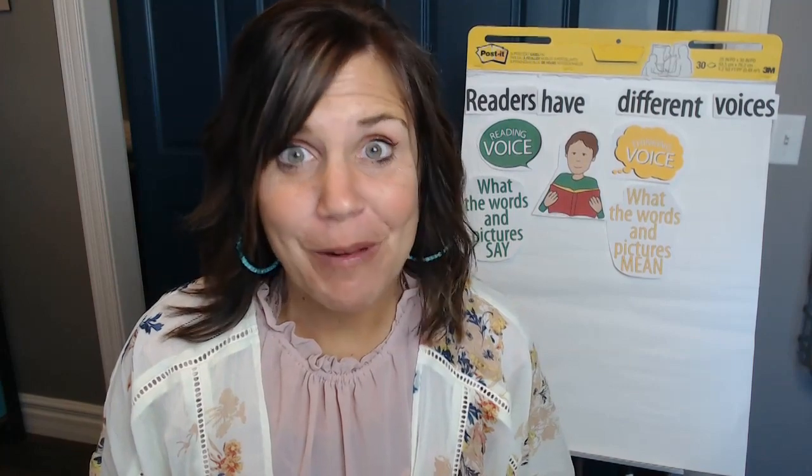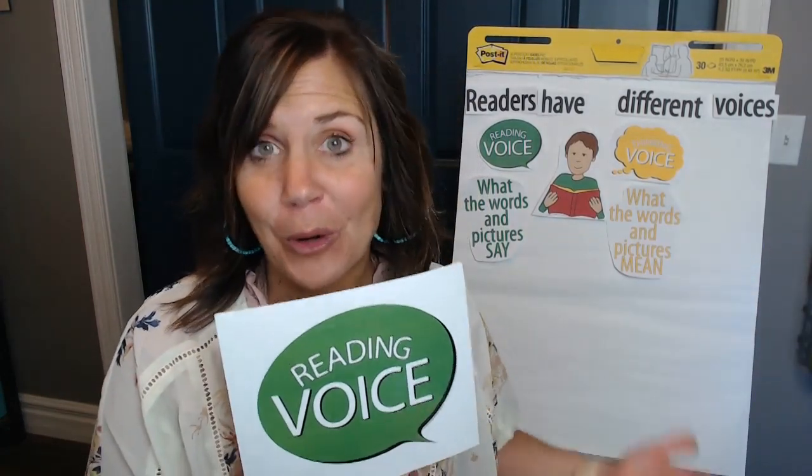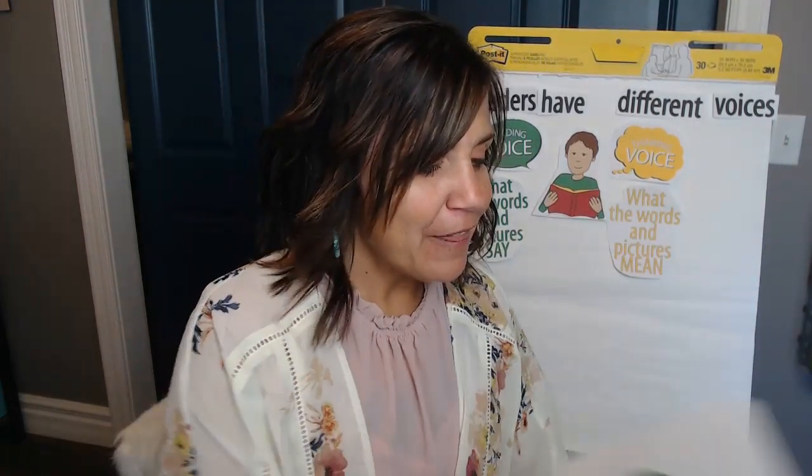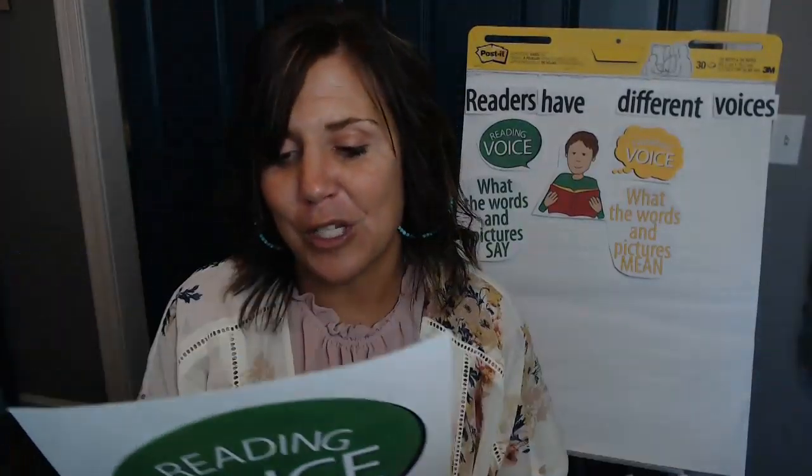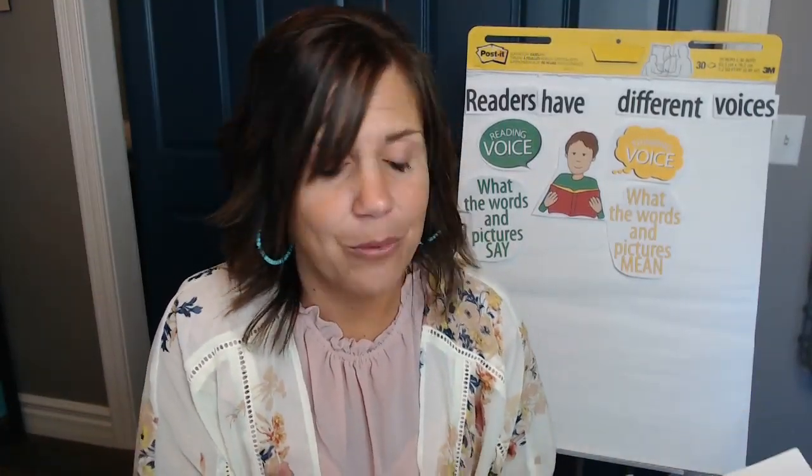In our previous reading lessons, we've talked about how we have two different voices when we read. We have a reading voice that actually reads the words and the pictures, and then we have a thinking voice — that is the thoughts. It's like a thought bubble, and it's those little whispers of what the words and the pictures mean when you're reading. We've talked about using those together: reading a few words, stopping and having a thought, then reading some more, and having a thought. Those two voices work really well together, no matter what kind of text you're reading.